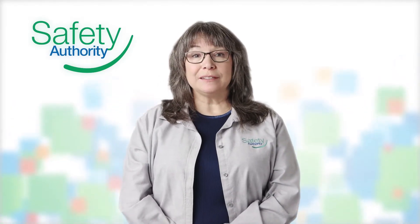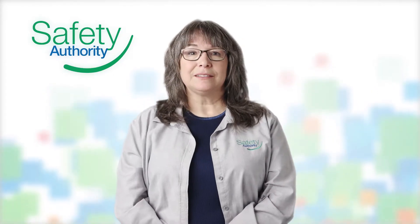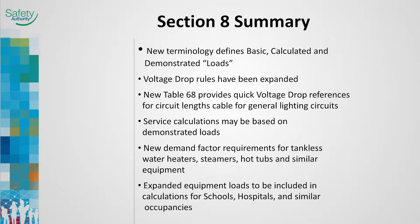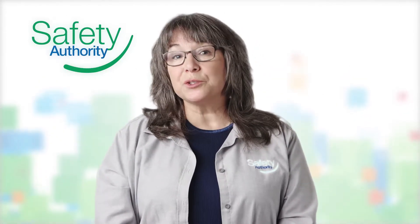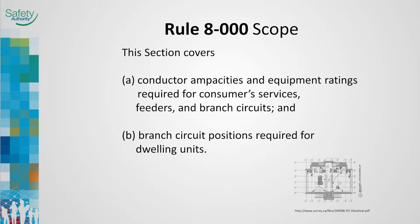Here is a Section 8 summary. New terminology defines basic, calculated and demonstrated loads. The voltage drop rules have been expanded. A new Table 68 provides quick voltage drop references for lengths of general lighting circuits. Service calculations may be based on demonstrated loads. New demand factor requirements for tankless water heaters, steamers, hot tubs and similar equipment. Expanded equipment loads to be included in calculations for schools, hospitals and similar occupancies. Remember, Section 8 does not cover all specific loads and the branch circuits which supply them. For example, you'll find motors in Section 28 and the electric heating loads in Section 62.